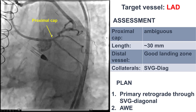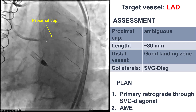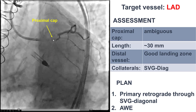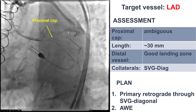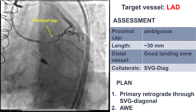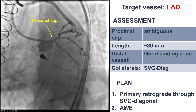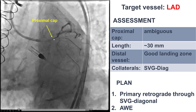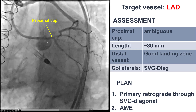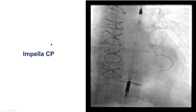The plan here was to re-canalize the LAD CTO. The LAD had an osteo-occlusion with an ambiguous proximal cap, length of about 30 mm. The distal vessel was filling retrograde through the saphenous vein graft to the diagonal. Given the proximal cap ambiguity, our plan was to start with a primary retrograde approach through the saphenous vein graft to diagonal, and if that did not work, then perform IVUS and try to locate the proximal cap and do antegrade wire escalation.